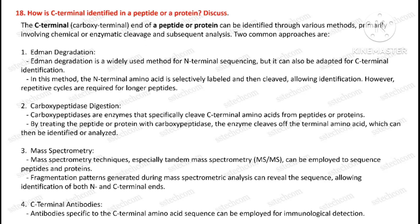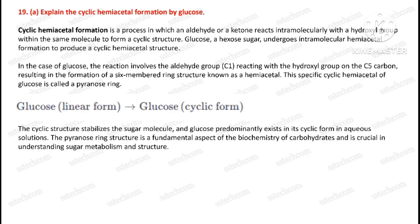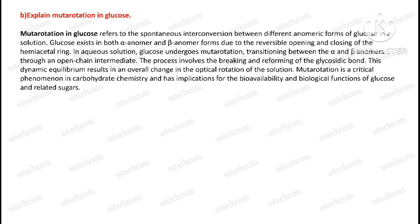Question number eighteen: How is the C-terminal identified in a peptide or a protein? Discuss. Question number nineteen, first part: Explain the cyclic hemiacetal formation by glucose. Second part: Explain mutarotation in glucose.